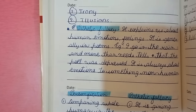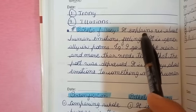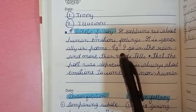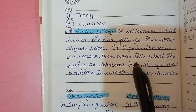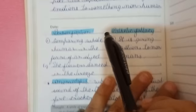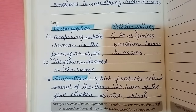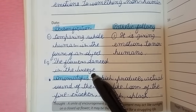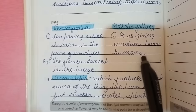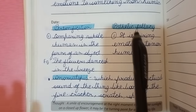Illusion: this is what is happening to Little Match Girl. Pathetic fallacy: this is a quite different figure of speech. It explains human emotions and feelings, and is generally found in poems. Example: 'I go in the rain and more than needs' — this tells us that the poet was depressed. It is always about giving emotions to something non-human. The difference from personification: personification gives human characteristics to an object (like 'flowers danced in the breeze'), while pathetic fallacy gives emotions to non-living things.